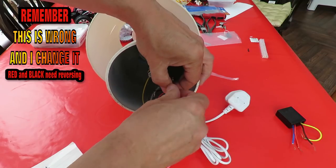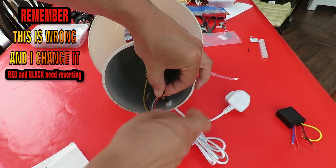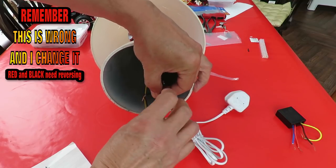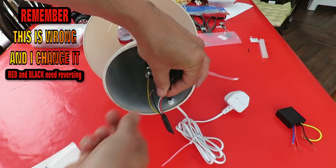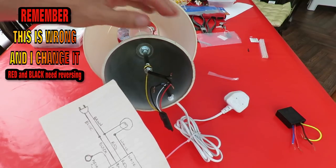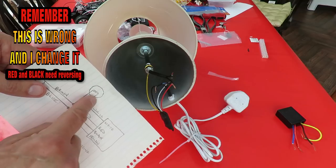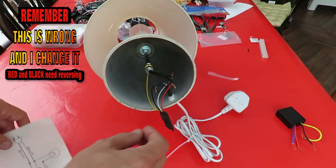And then finally we've got the white wire from the sensor is going to go to the other leg of the light bulb.